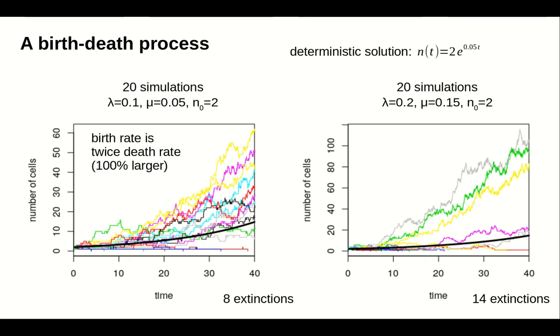In the first case, the birth rate was twice the death rate, or 100% larger than the death rate. In the second case, the birth rate was only one-third larger than the death rate. With a smaller relative difference, it is more likely that, at some point in the simulation, we have two more deaths than births, which leads to an extinction.